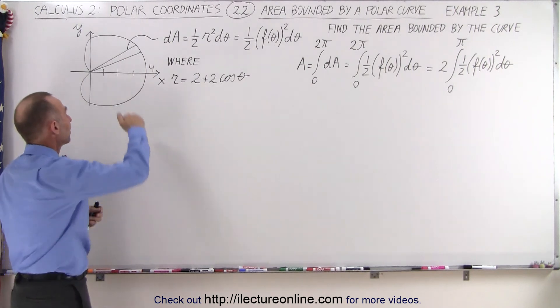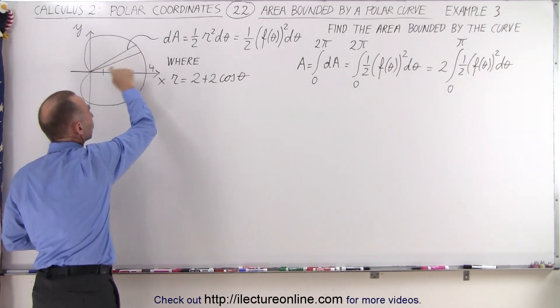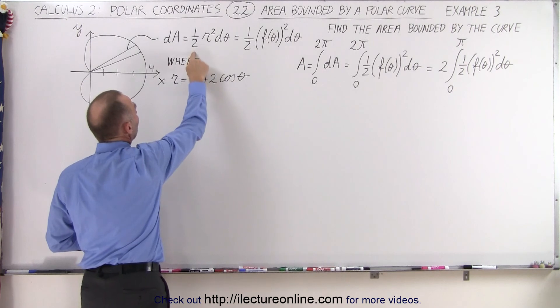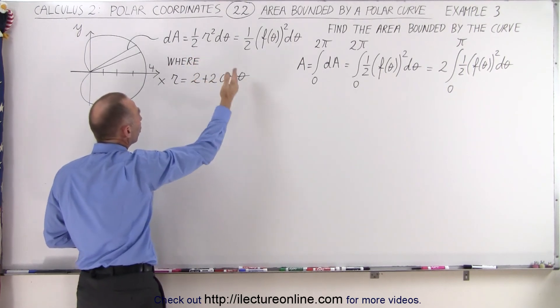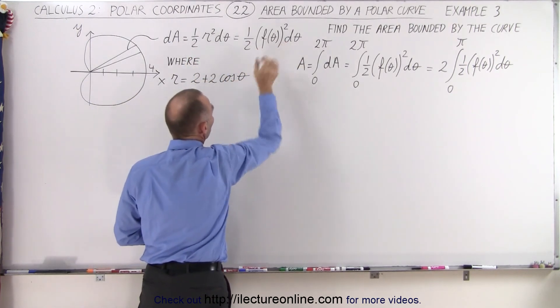So again, we slice a small little area element, dA, which is that triangular-shaped area. So this is 1 half r squared d theta, or 1 half times the function squared d theta.